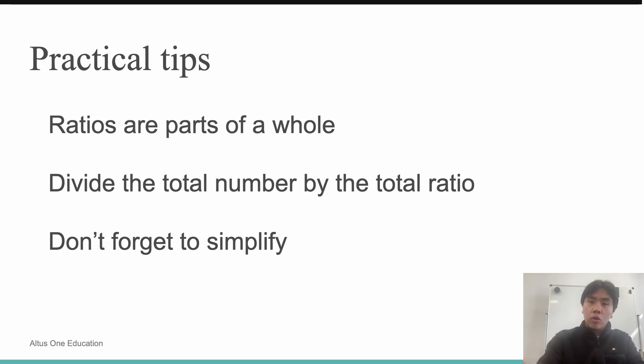You can divide the total by the mini ratio's total parts, we added the 1, 2, and 5, and that'll give you the number of mini ratios, which you can then multiply by each number in the ratio to find the total amount. Also, don't forget to simplify your ratios.